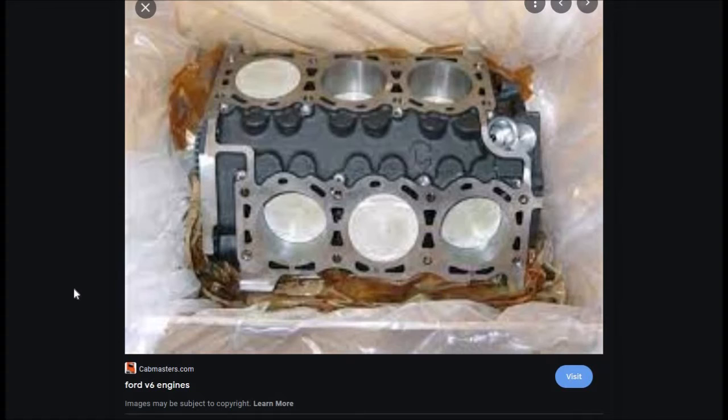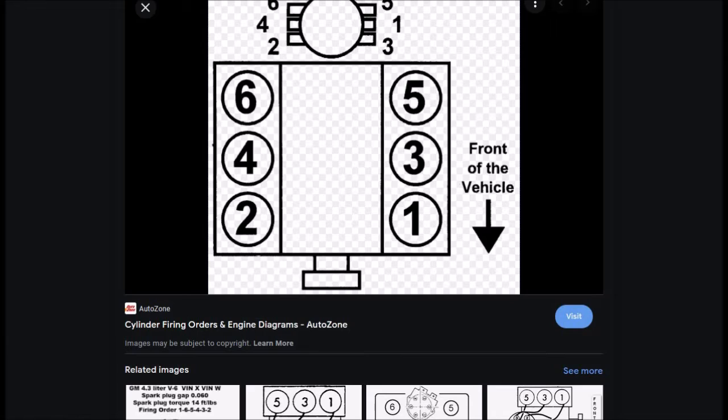So the V6 has six cylinders. The easy way to spot this is if you just count the spark plugs on both sides. You'll be able to see there'll be three spark plugs on one side and three spark plugs on the other side.